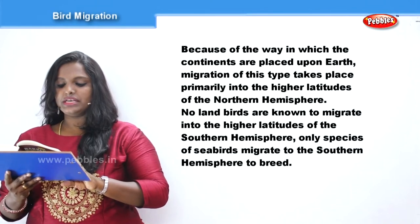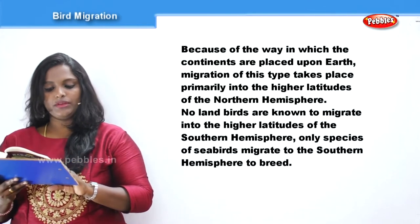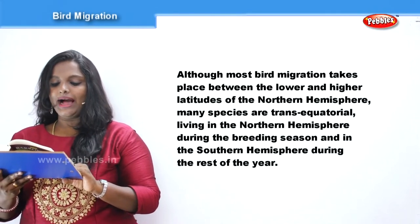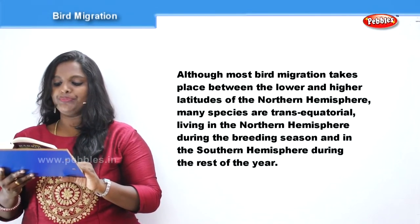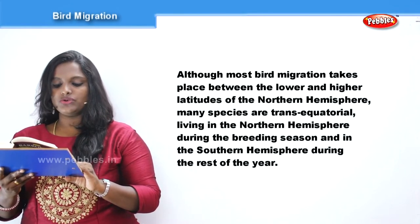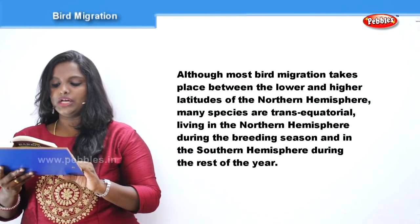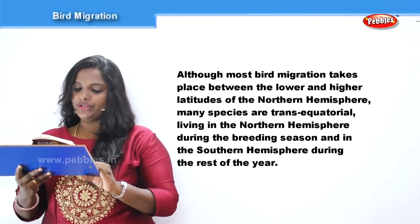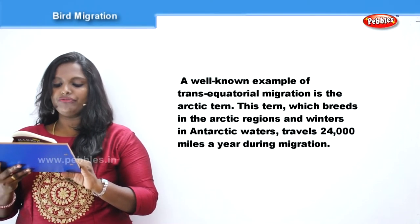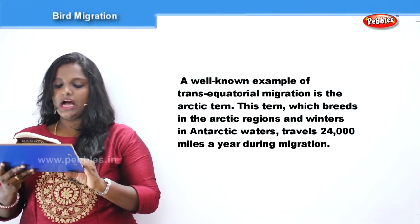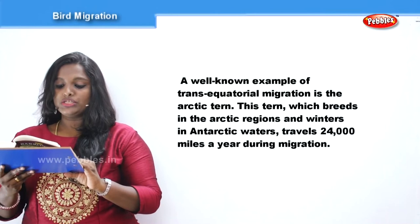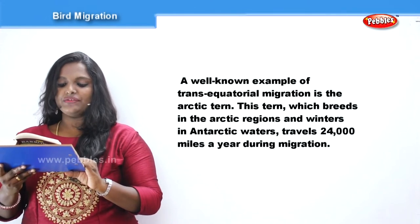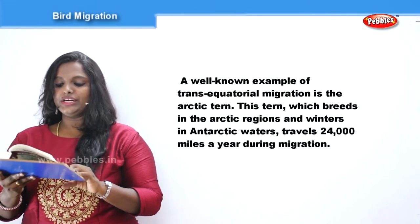Only species of sea birds migrate to the southern hemisphere to breed. Although most bird migration takes place between the lower and higher latitudes of the northern hemisphere, many species are trans-equatorial, living in the northern hemisphere during the breeding season and in the southern hemisphere during the rest of the year. A well-known example of trans-equatorial migration is the Arctic tern, which breeds in the Arctic regions and winters in Antarctic waters, travelling 24,000 miles a year during migration.